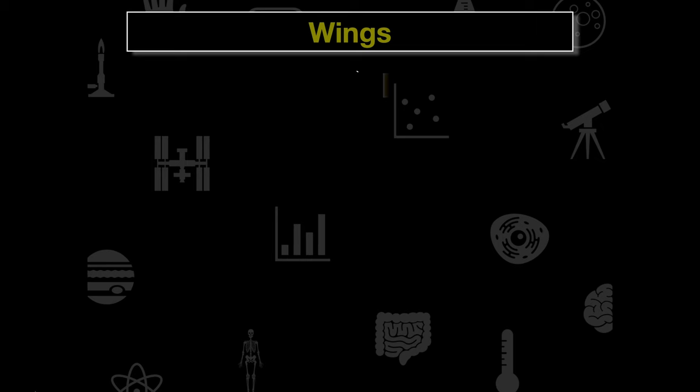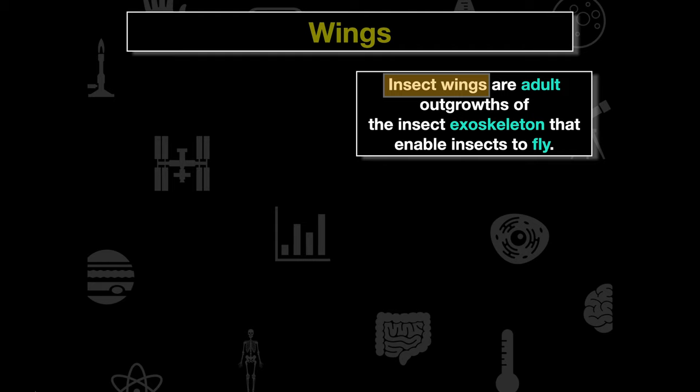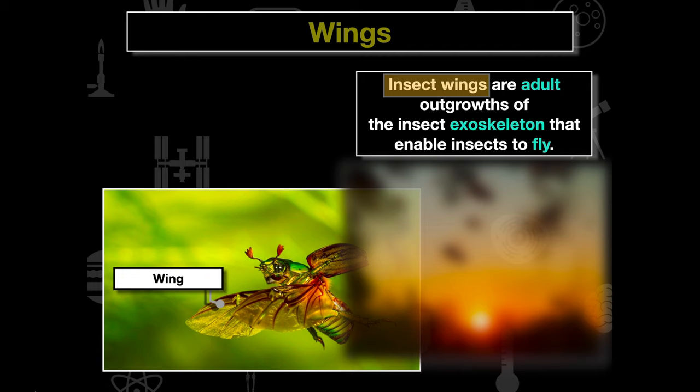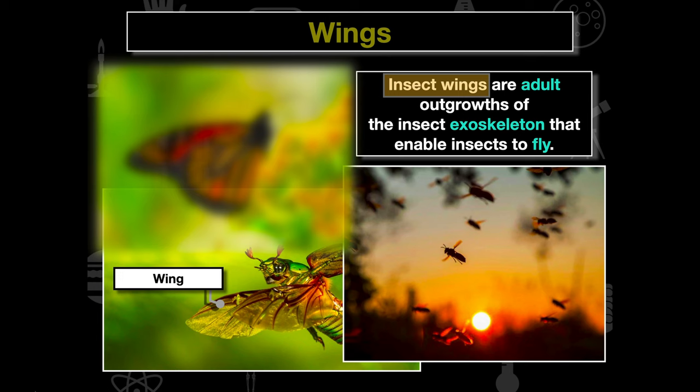In the previous video we ended with the thorax. Generally what we're going to see on the thorax are these adult outgrowths — the wings. They're made out of the exoskeleton and they enable insects to fly. We can see here a beetle with exoskeleton wings, and we all know that bees have wings that enable them to get from flower to flower and collect pollen.